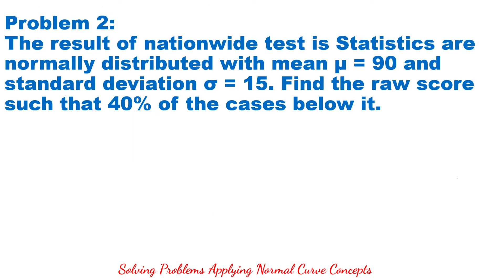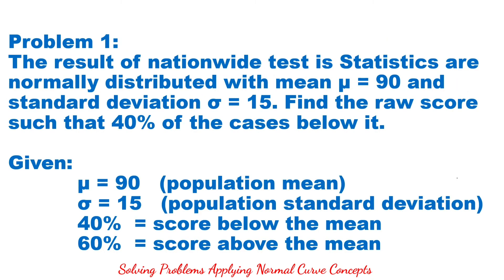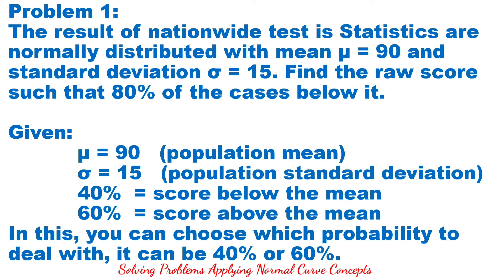Problem number 2. The result of a nationwide test in statistics is normally distributed with mean equals 90 and standard deviation equals 15. Find the raw score such that 40% of the cases are below it. The givens are mean equals 90, standard deviation is 15, 40% of scores below the mean, and 60% of scores above the mean.